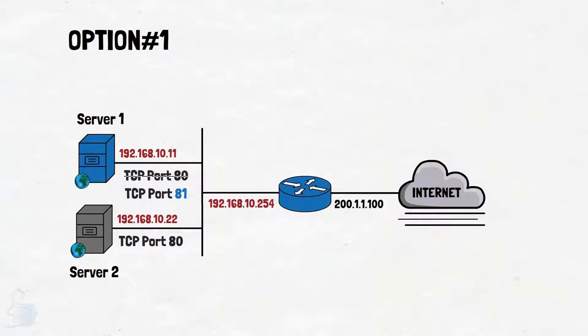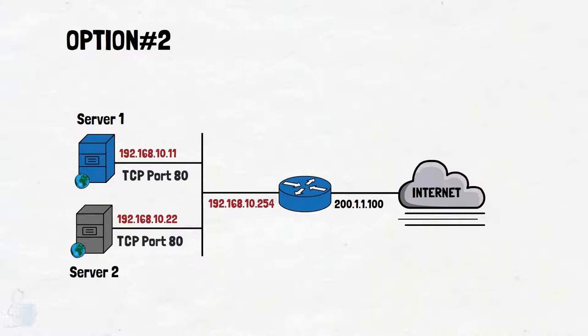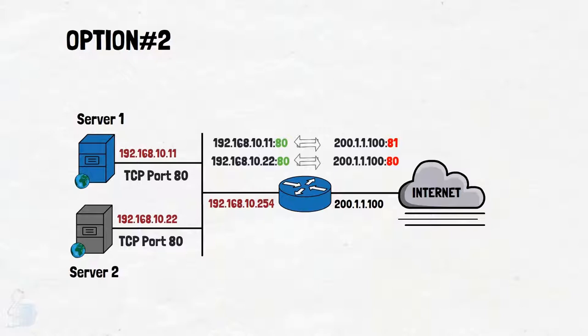Hence, we are left with two options. Option 1: we could change the internal port numbers of the servers, but that would cause all sorts of havoc on the system team, as they may have internal applications bound to that port number. There's always kind of a clash between the system team and the network team, so getting them to change the port is not going to be easy. Option 2: we can change the external port number on the NAT router to facilitate both servers on a single public IP address. This is one of the most commonly used static PAT configurations when you have multiple internal servers with overlapping ports.